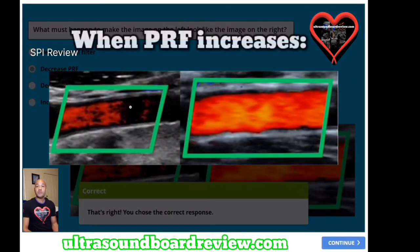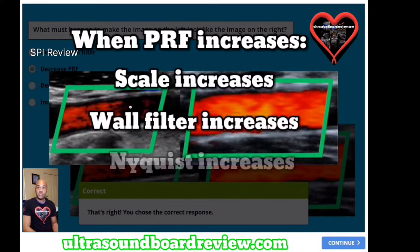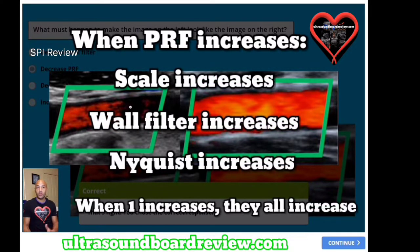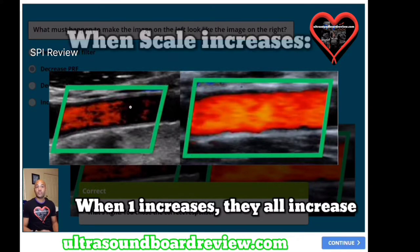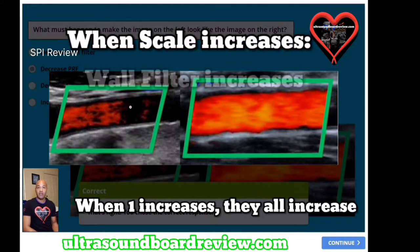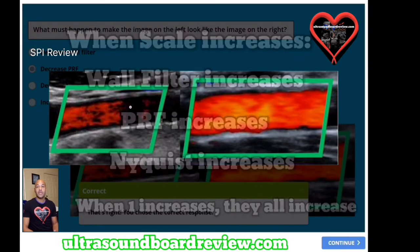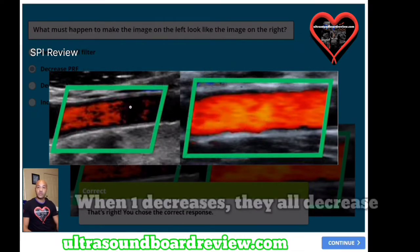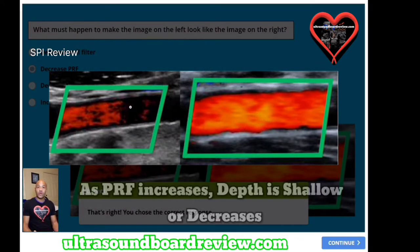What's going on is your PRF here is too high. Anytime your PRF goes up, that means your scale, your wall filter, and your Nyquist limit all go up. When you adjust one of those, all four go up. So if you adjust your scale, your wall filter, PRF, and Nyquist limit all go up. If you decrease one of them, they all go down.